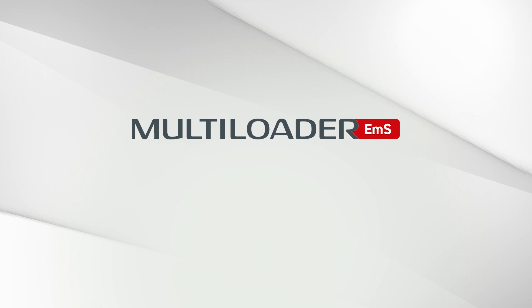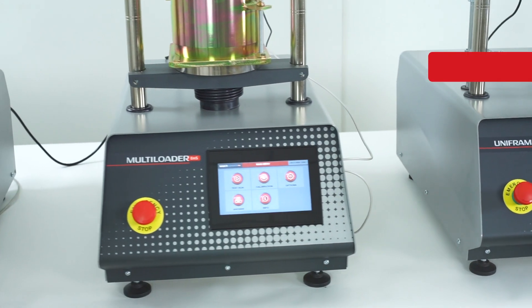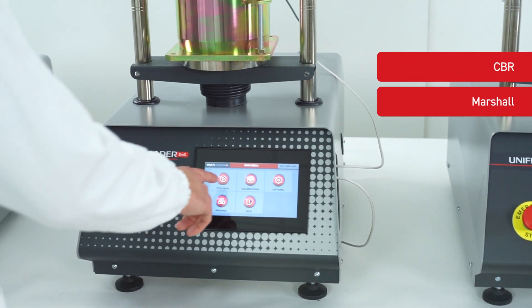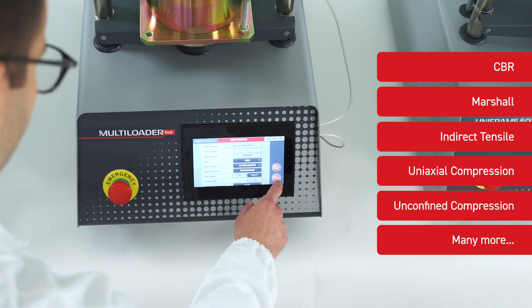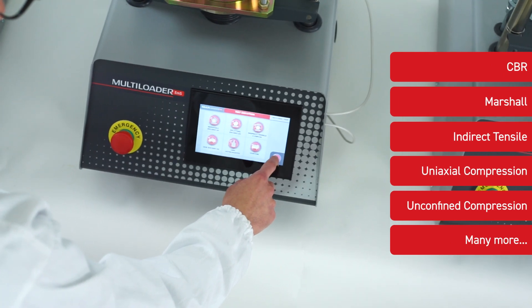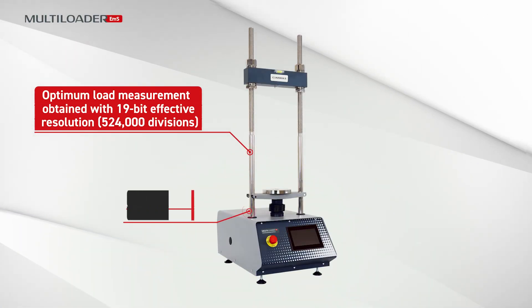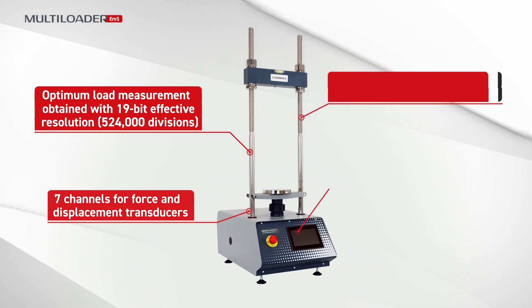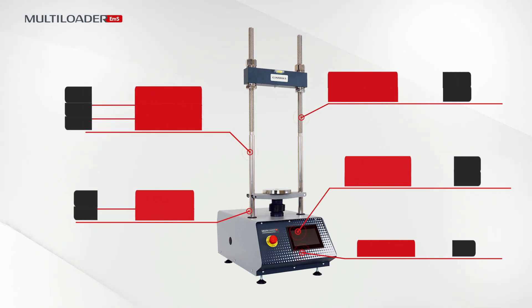Meanwhile, the Multi-Loader benefits from all the advantages of the Speed Loader but also includes many improvements to the operator interface and machine performance. Its high resolution 7-inch display guides through all testing procedures thanks to many standard compliant preset testing profiles. The Multi-Loader delivers optimum unconfined compression measurement accuracy thanks to 19-bit effective resolution. In addition, up to four different external displacement transducers can be connected.